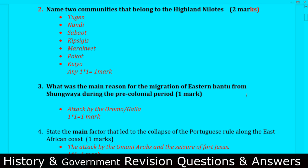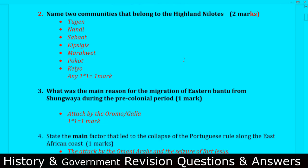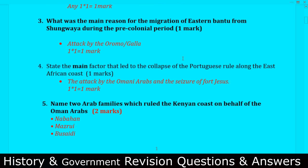Question number two: Name two communities that belong to the Highland Nilotes. The Highland Nilotes include the Tugen, Nandi, Sabot, Kipsigis, Marakwet, Pakot, and Kyo. Those are the communities that belong to the Highland Nilotes.